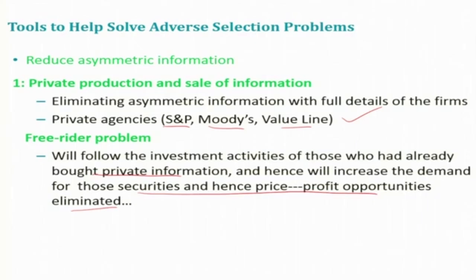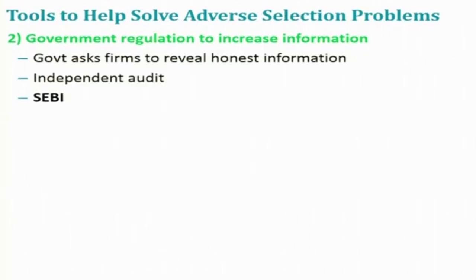In order to overcome this, another solution is government regulation to increase information. To avoid the free rider problem, financial markets can benefit from government intervention. Government could, for instance, produce information to help investors distinguish good firms from bad firms. However, that is actually a politically difficult proposition, because it is not appropriate for government agencies to publicly declare that these firms are high risk or bad risk and these firms are good risk.